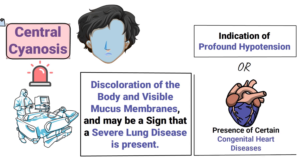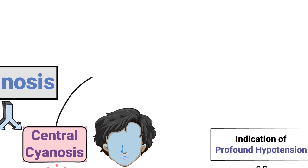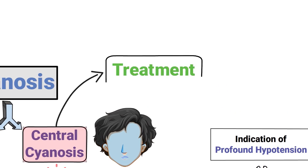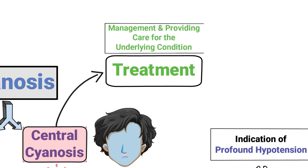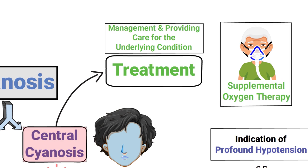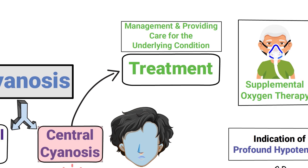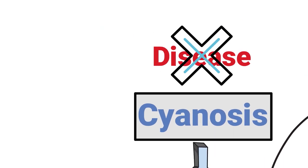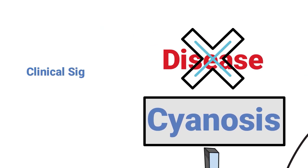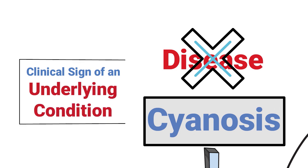This is rarely the case for peripheral cyanosis. Treatment of central cyanosis involves managing and providing care for the underlying condition, and supplemental oxygen therapy is almost always indicated as well. It's important to remember that cyanosis by itself is not a disease — rather, it's a clinical sign of an underlying condition.